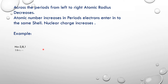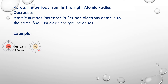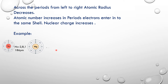That is why the atomic radius decreases in periods from left to right. Let us consider an example using elements of the third period. Sodium has three shells (K, L, M), with configuration 2, 8, 1, and its atomic radius is 186 picometers. Magnesium has configuration 2, 8, 2 — one more electron is added into the same M shell — so its atomic radius decreases to 160 picometers because nuclear charge is increasing.